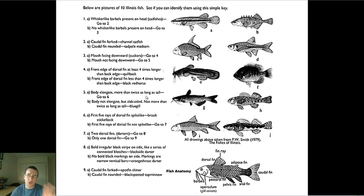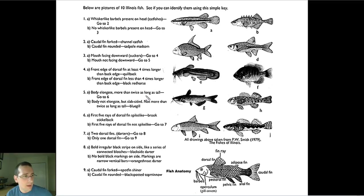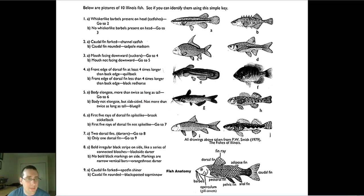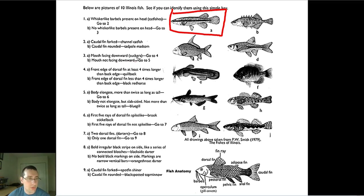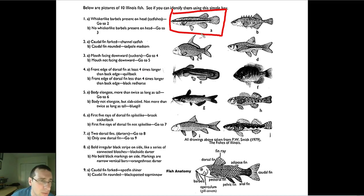Here's an example with 10 types of Illinois fish. Number one: are whisker-like barbels present on the head? I don't see any barbels, so I go to three. The mouth faces downwards? I'm not sure, so I go to five. Is the body elongated — more than twice as long as it's tall? Yes, so I go to six. Do the first five rays of the dorsal fin have spike-like structures? I don't see any, so it's not a brook stickleback — I go to seven.